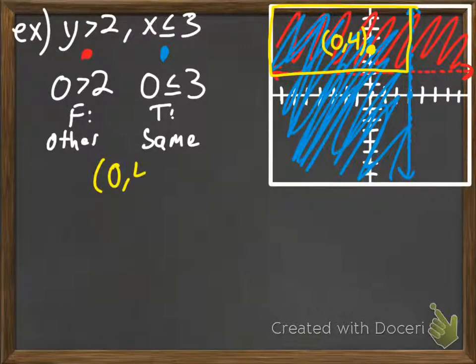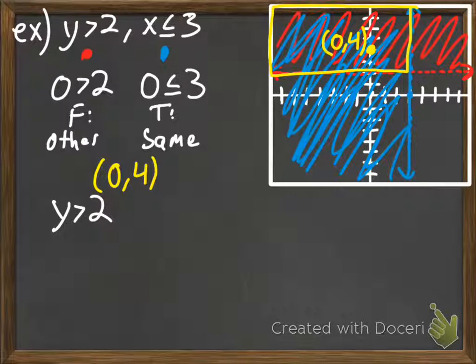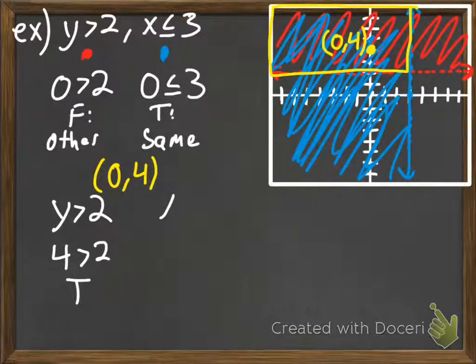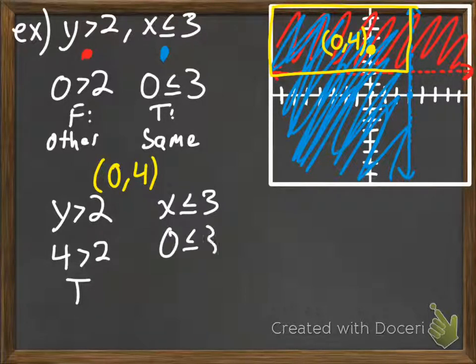So we're going to test (0,4) in both of them. So y greater than 2. Is 4 greater than 2? That's true. Then we have x less than or equal to 3. We plug in 0 for x. That's true. So we know that this is right. So that shaded area is our solution. So that's how we represent it. We represent it by this shaded area here.